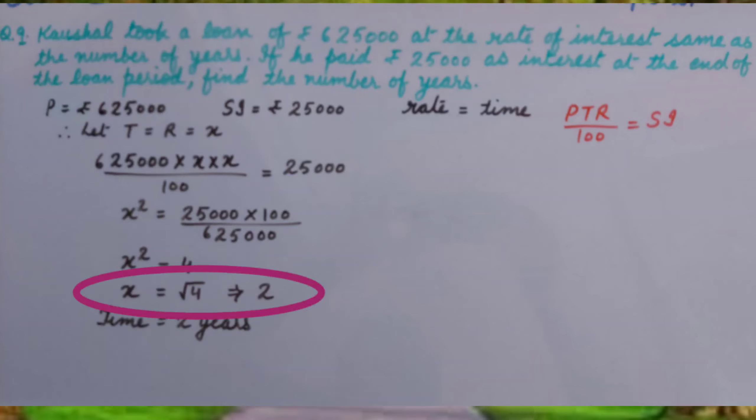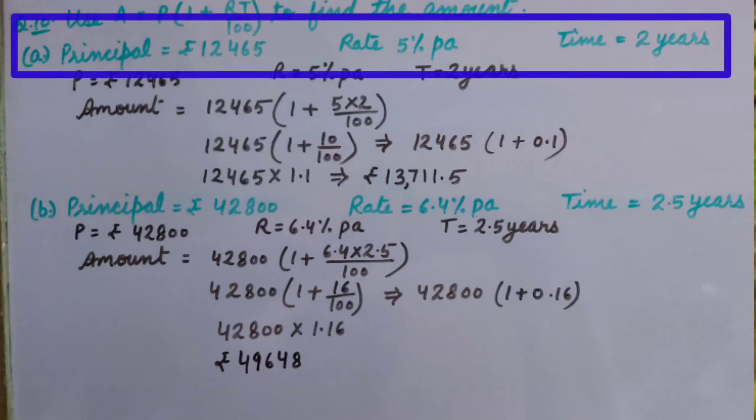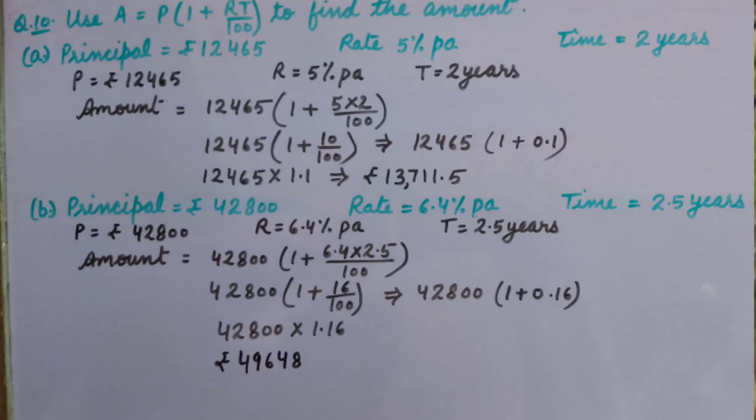Question number 10: Use A = P(1 + RT/100) to find the amount. Part (a): Principal equals rupees 12,465, rate 5% per annum, time 2 years. As we know, the information is given as principal rupees 12,465, rate 5% per annum, time 2 years. We will insert the values in the formula.